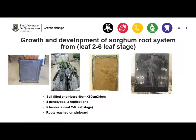The key question is: why investigate nodal root angle? The first experiment we conducted was to understand what the sorghum root system looks like. This experiment was conducted in soil-filled root boxes that are 60 centimeters deep, 40 centimeters wide, and 5 centimeters thick. We used four genotypes with three replications and individual plants were grown in these boxes.